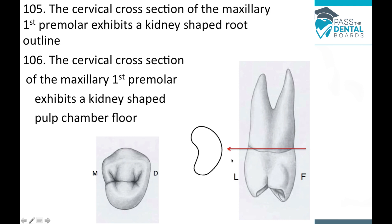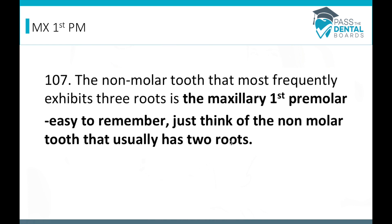The cervical cross section of the maxillary first premolar exhibits a kidney bean shape, and that's because of that mesial concavity. If you were to take this kidney bean and superimpose it over the top of the tooth, that's the shape that the root would take. Another way to ask this question: the cervical cross section of the maxillary first premolar exhibits a kidney bean shape on the pulp chamber floor.